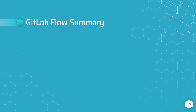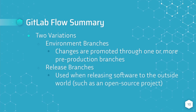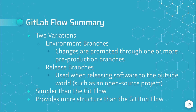Let's quickly recap the GitLab flow. There are two variations of the GitLab flow. The first variation utilizes long-lived environment branches, where changes are promoted through one or more pre-production branches before being merged into the production branch. The second variation utilizes release branches, and should only be used when releasing software to the outside world, such as an open source project. The GitLab flow is simpler than the Git flow, but provides more structure than the GitHub flow. In the next video, we will practice the GitLab flow in our GitLab account.